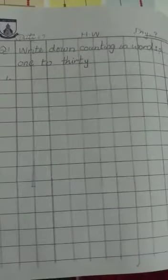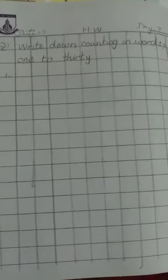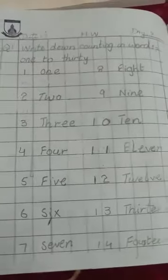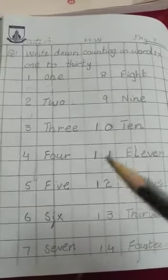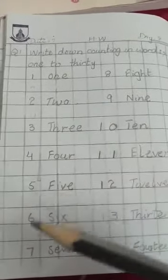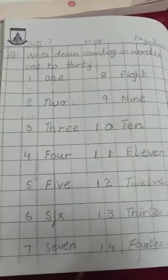to thirty. Okay, today we will do counting in words from one to thirty. Yes, you will do like this: your counting in number also and in word also. Okay, like this.